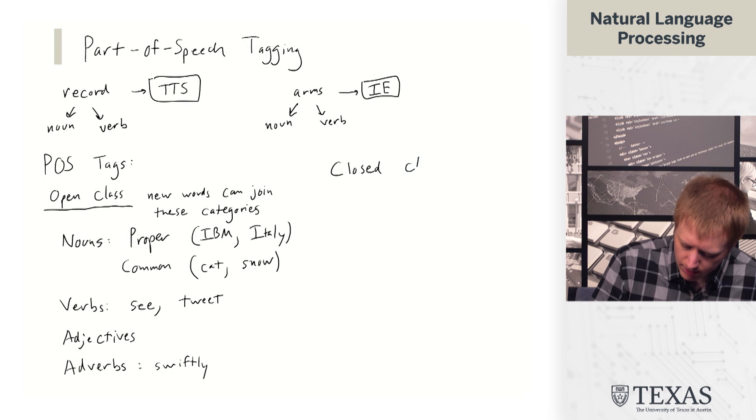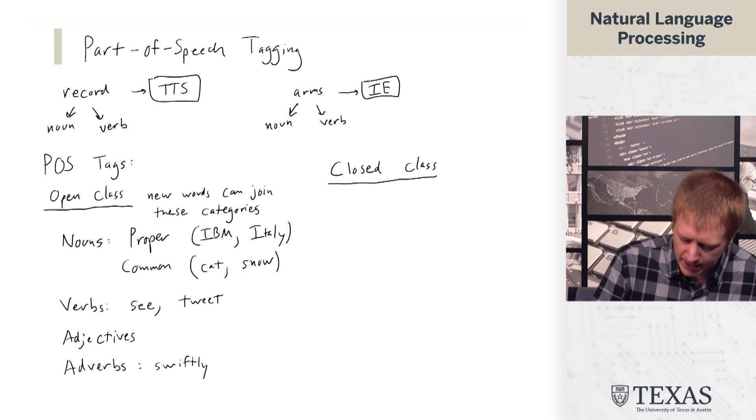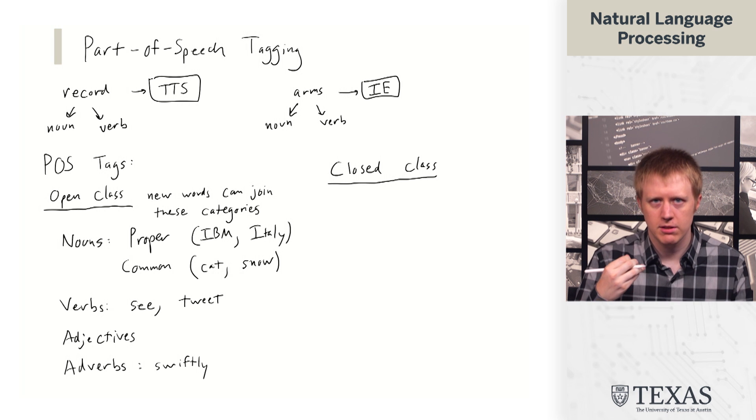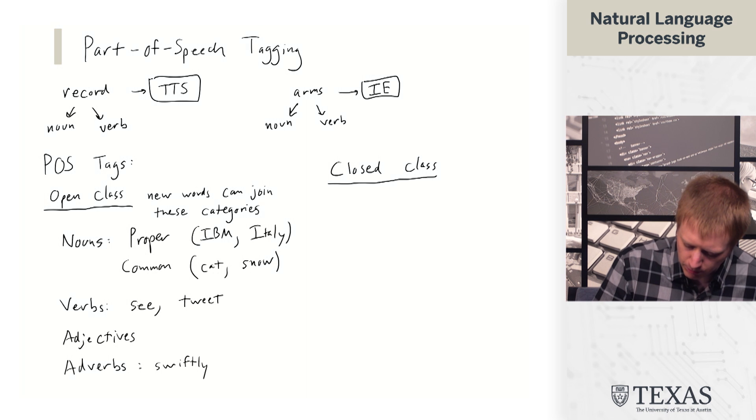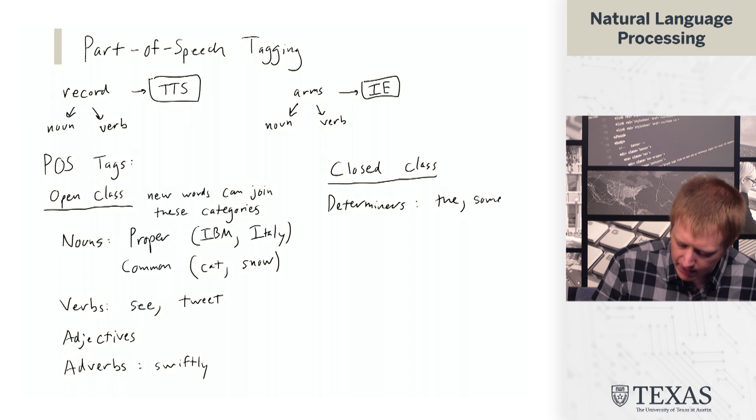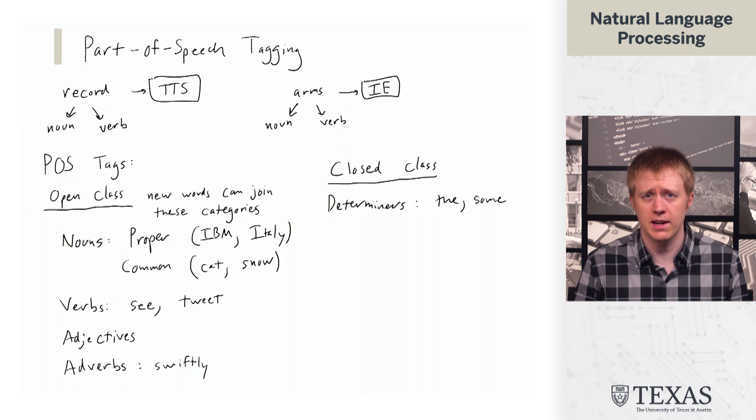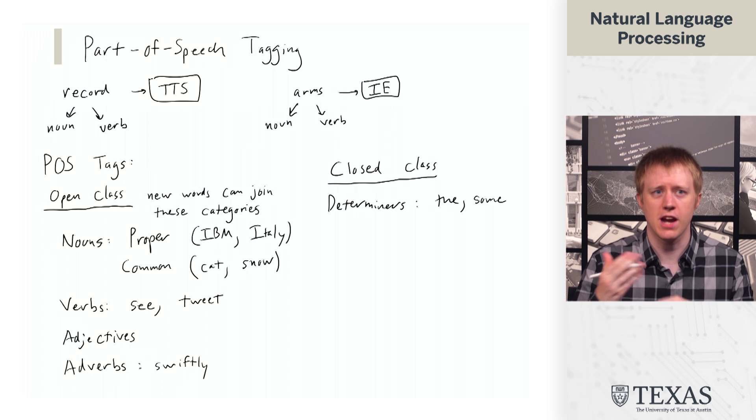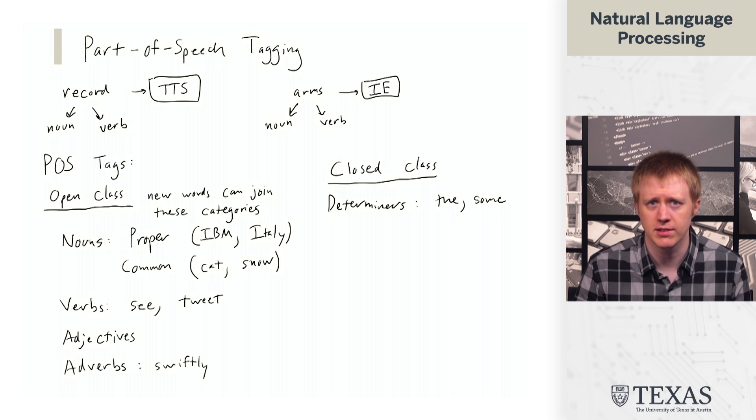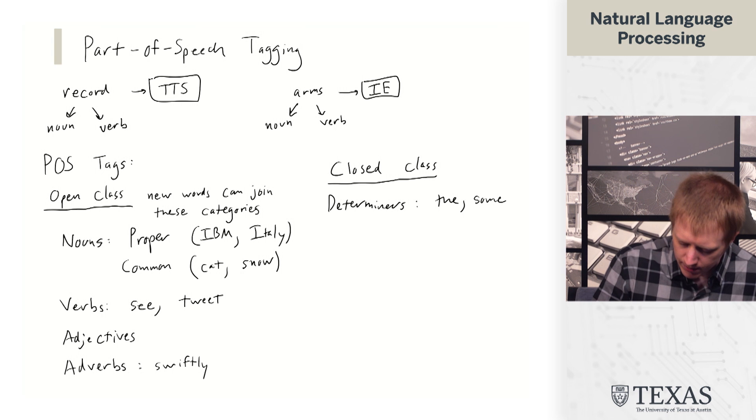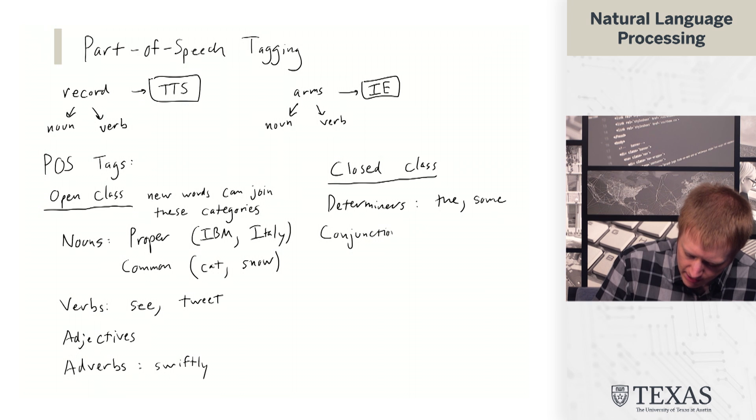In terms of closed class tags, we have a few more categories that are typically related more to function words. The first one we have here are determiners, which are going to be the, some, and other words like this. This includes articles. Basically, these are words that can modify nouns as part of noun phrases. What they allow us to do is say the cat versus a cat. The choice of article or determiner is going to change how we interpret that noun, whether we think we're talking about some generic cat or a cat that's already in the discourse.